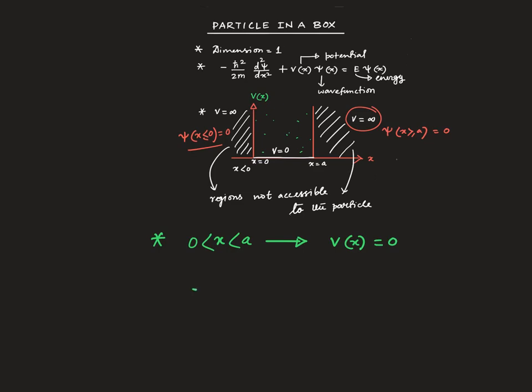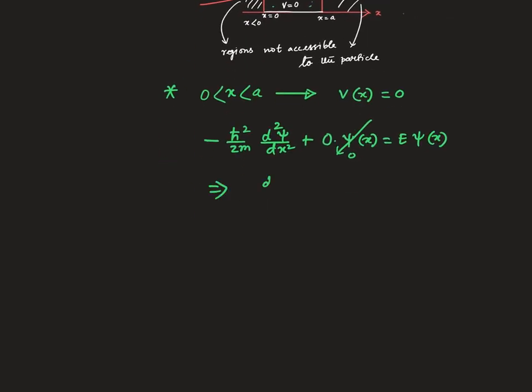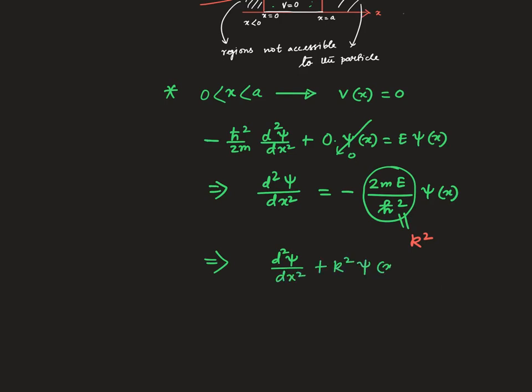So put your Schrödinger equation here and you will get minus ℏ² over 2m d²ψ/dx². Now if the particle has positive energy, then this thing is a positive quantity. Rename it as k². So now our equation becomes d²ψ/dx² plus k²ψ(x) equals 0.